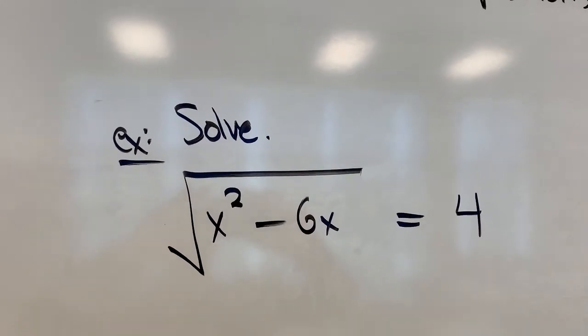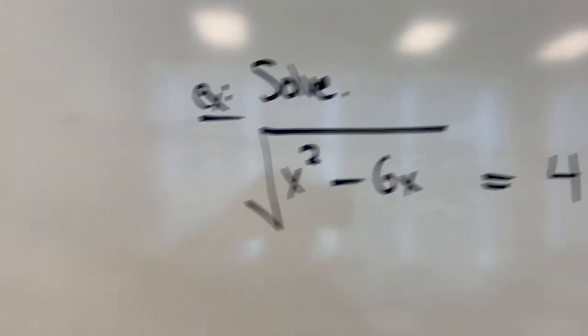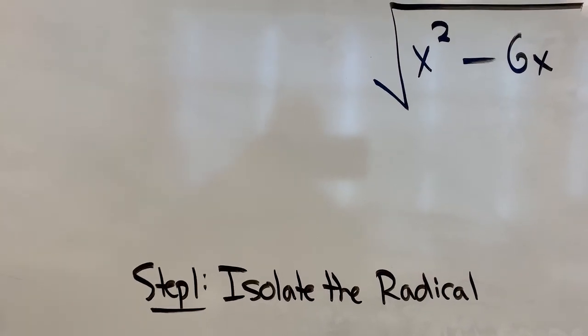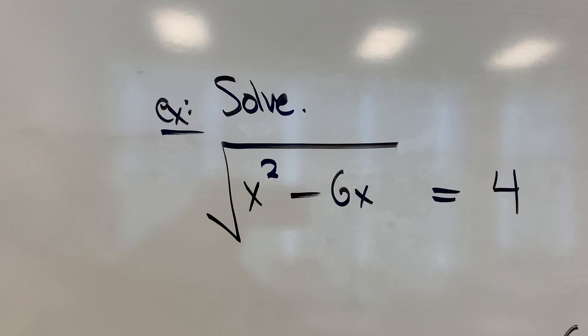So I've put some steps down of how to do these in general, and then we're going to follow those steps. So step 1 is to isolate the radical, get the square root on one side all by itself. Well, in this particular question, that's already done for us. The radical is all by itself, so I don't have to worry about that.